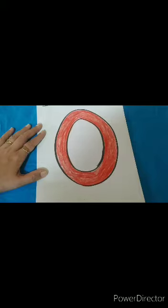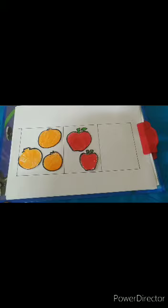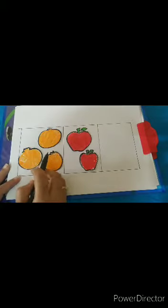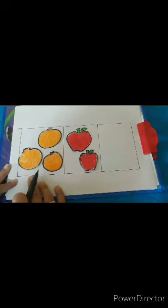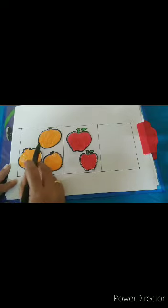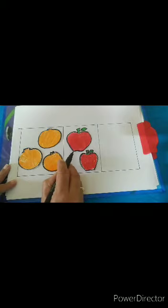Before that, teacher will show you some objects. See here, in the first box, there are three oranges. One, two, and three. Three oranges. In the second box, there are two apples.